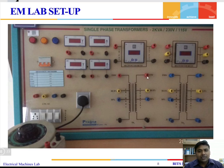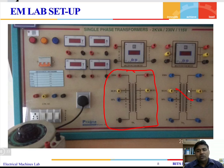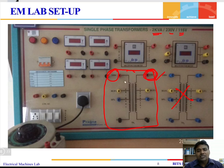Here we see the setup that we have. This is a single phase transformer — there is a panel having two single phase transformers but we will use only one. This side is 115 volt and this side is 230 volt. The transformer is 2 kVA, 230 volt by 115 volt — 115 volt is the low voltage side and 230 volt is the high voltage side. We have multifunction meters to measure current, voltage, power, and other data.